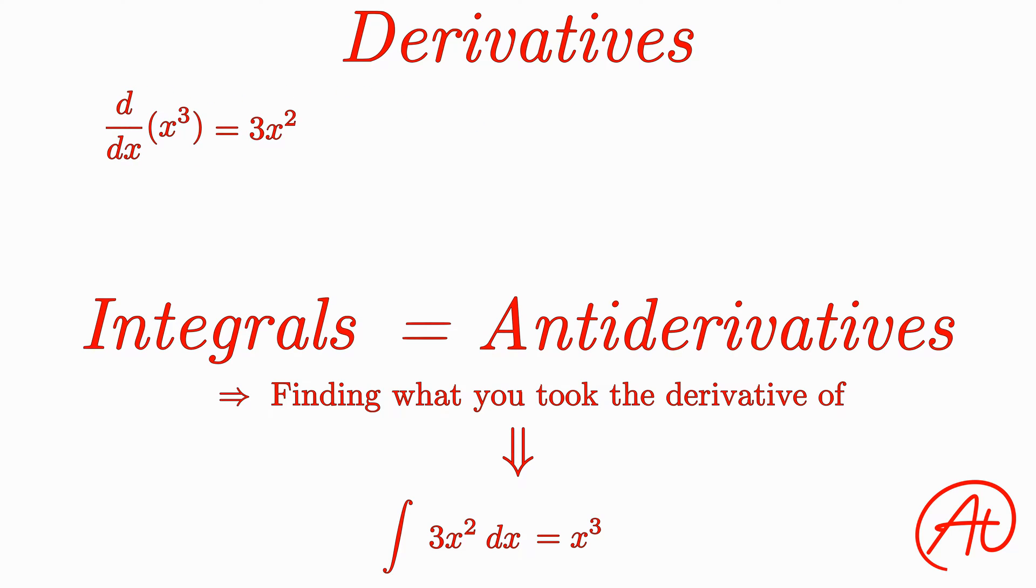When we took the derivative of x cubed, we were absolutely correct in saying that the answer was 3x squared. However, what if we wanted to find the derivative of this function, x cubed plus 2? The answer would still be 3x squared, right? Because the derivative of the 2 would just be 0.